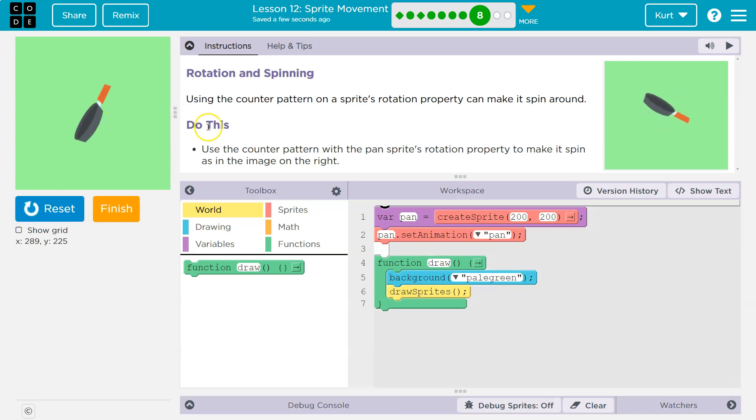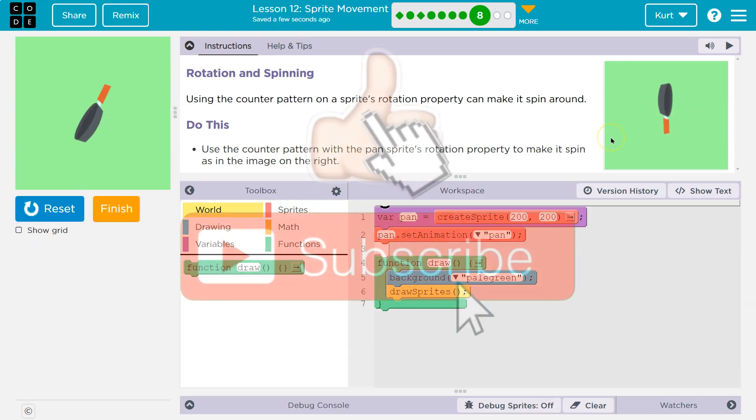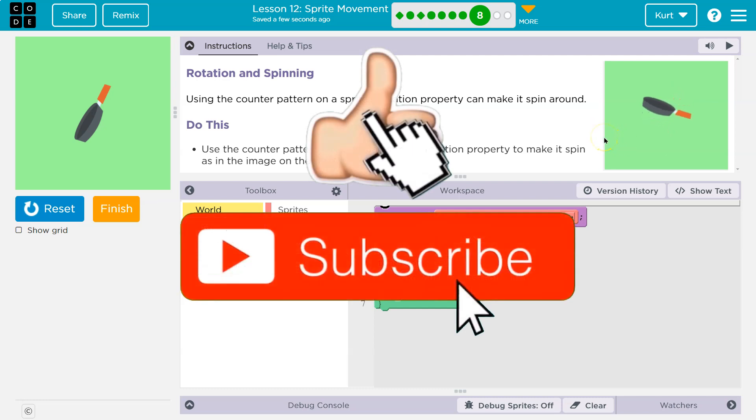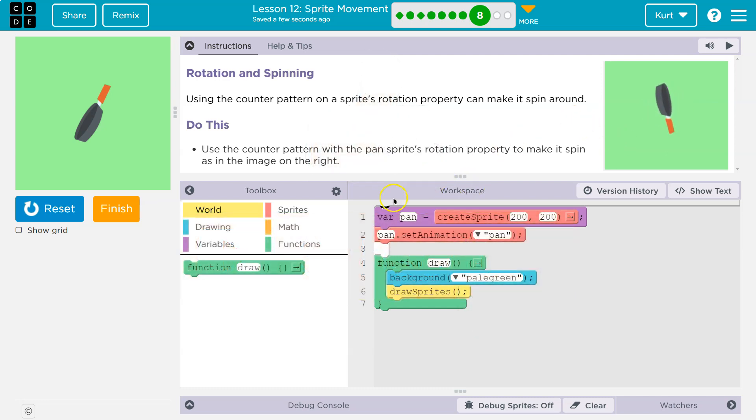Let's check out. We have a pan not moving. They have a pan moving. All right. Now remember, the counter pattern is when you take a variable and add to it.